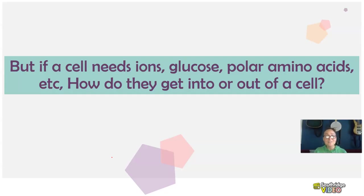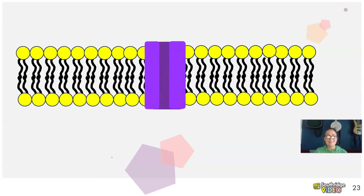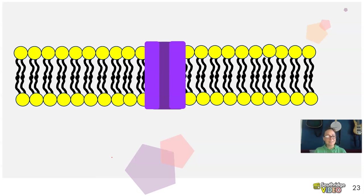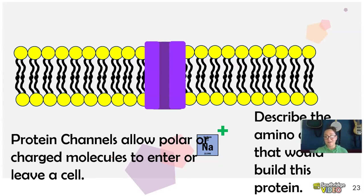But if a cell needs ions, glucose, polar amino acids, et cetera, how do they get into or out of a cell? Well, that's where protein channels come into place. And so when we look at this, here you have some protein channels. And in these protein channels, this is where your polar or charged molecules can enter and leave a cell. And so you can think of these protein channels as kind of like gates or entryways into or out of a cell.